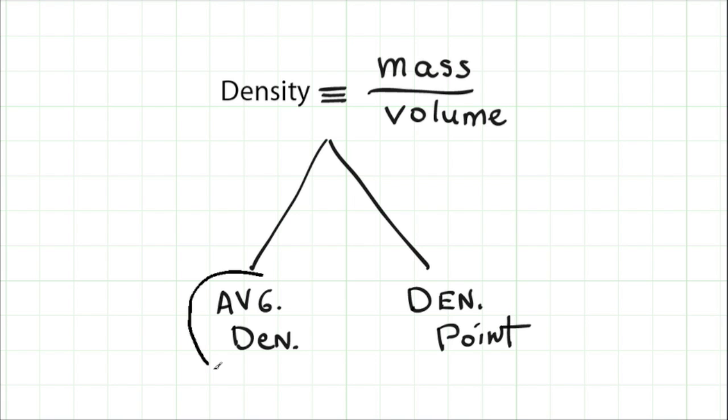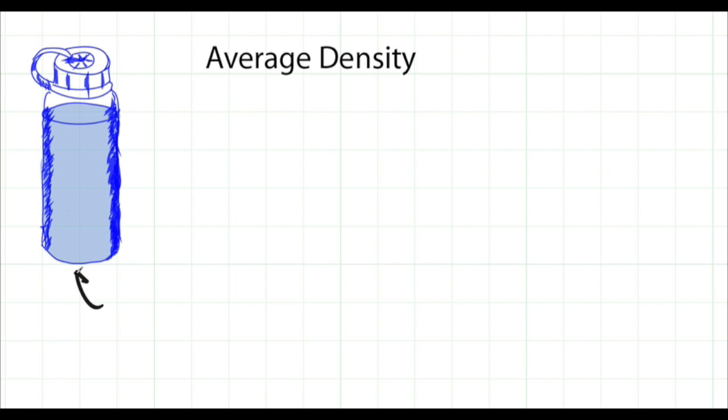Let's first define average density. I've sketched a one liter water bottle here. If we want to talk about the density of the water, I'd write the Greek letter rho, which is the standard symbol for density.